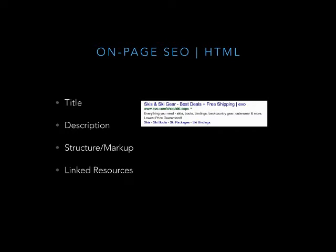The meta description — the black text you see below the title in search results — is really more about click-through rate than SEO itself. It's good to use your keywords in there, but it's not as strong an SEO factor as people once believed. It's more about getting people to click through. If you're ranking well for keywords you care about, you need a solid message that elicits a click-through from the user.